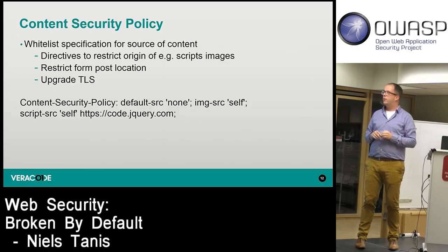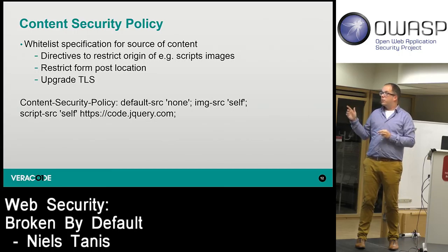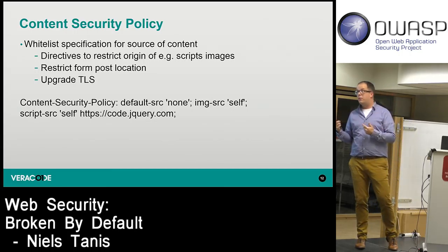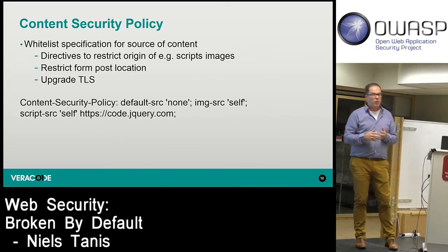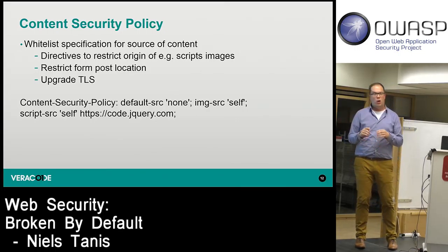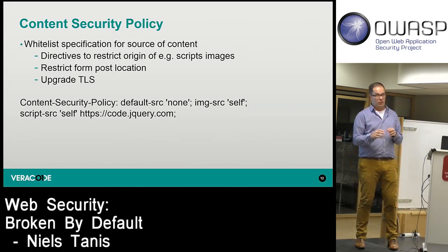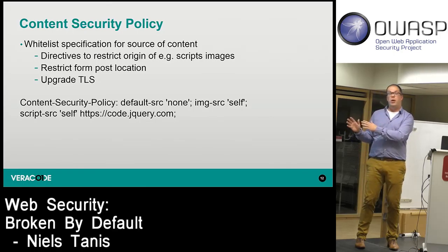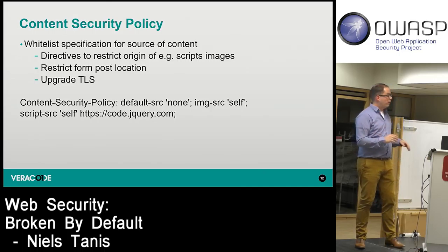A simple CSP example would define a whitelist for images to originate from the same web server and scripts to only load from the same server or jQuery.com. But you can imagine that if jQuery.com is in your whitelist, all scripts loadable from jQuery.com become a potential hazard because they still meet the policy.